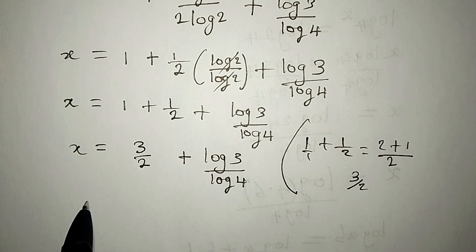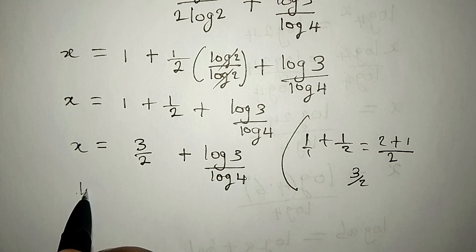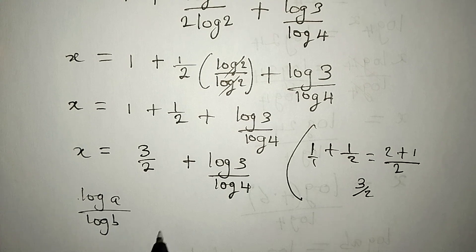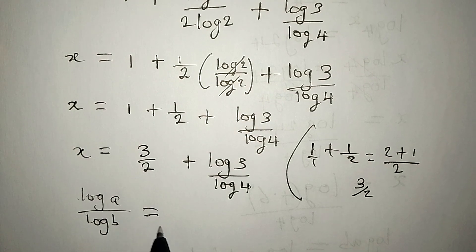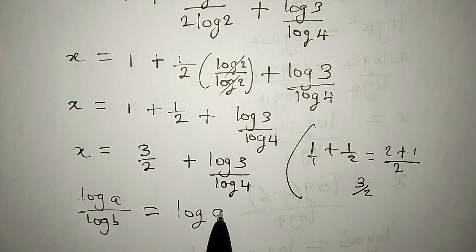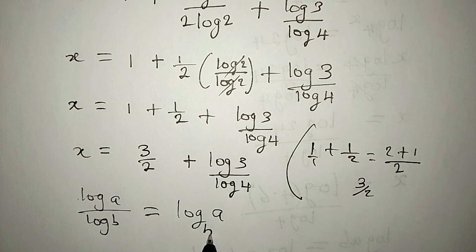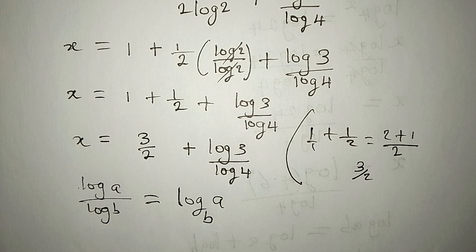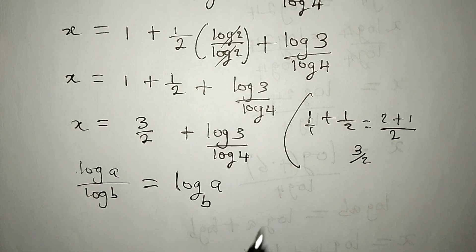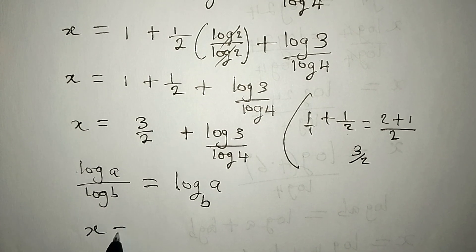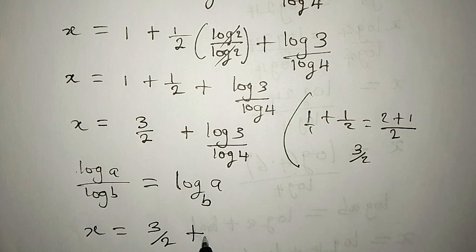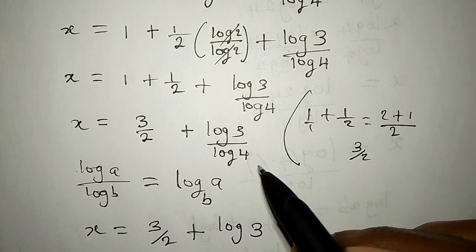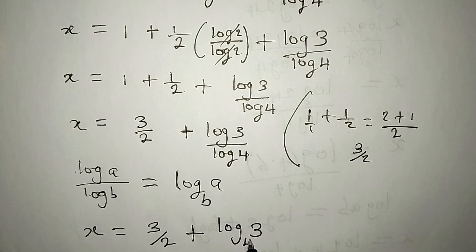Now, back to what we have here. We are going to have, if you have log A over log B. Since they are having the same base, it is the same thing as log A to the base of B. This is called change of base. So, we are going to do the same thing to this. So, that our x will be equal to 3 over 2 plus, in place of this, now we are going to write log 3 to the base of 4.